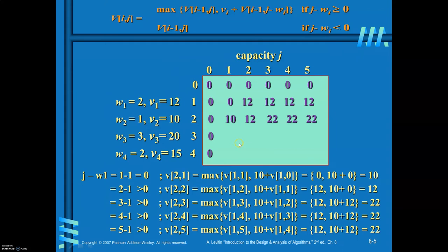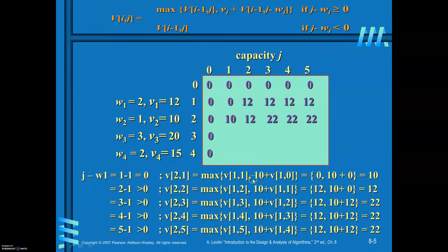Now we consider the second item in the sack. For v[2][1]: j minus w_i equals 1 minus 1 equals 0. You find the maximum of v[1][1] and 10 plus v[1][0], which is maximum of 0 and 10 plus 0, giving a maximum value of 10.